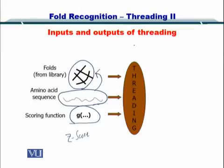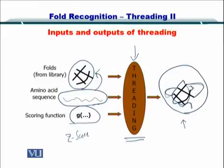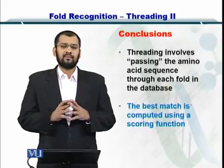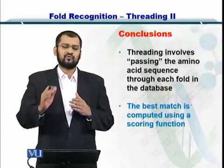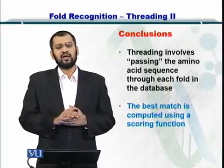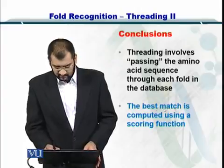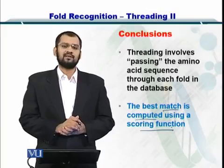You input these three things into your threading software and the output is a structure. In this output, we have the fold and some loops that are joining the different regions within this fold. In conclusion, we pass the sequence over the various folds during threading and find out which sequence best matches the fold. We create a combination of those folds to create the tertiary structure, and the best match is computed using a scoring function which is typically the Z-score.